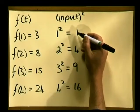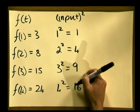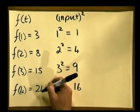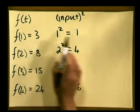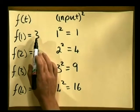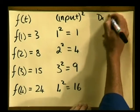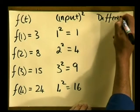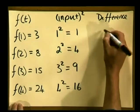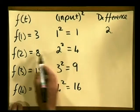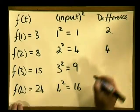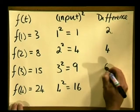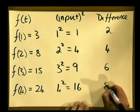Obviously, there is more to this relationship than just squaring because this answer is not the same as the output. What can I do to each of these values so that I get the required output values? Well, let's start out by looking at the difference between the squared value and the required output value. So, I'm going to make a column for difference. And the difference between these two is 2. The difference between these two values is 4. The difference between these two values is 6. And lastly, the difference between these two values is 8.